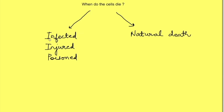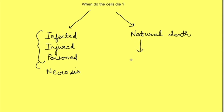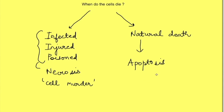The death that occurs when cells are infected, injured, or poisoned is known as necrosis. While the natural death that occurs due to signals from within the cell or from outside — but where cell death is part of the normal functioning of the body — is known as apoptosis. In layman's terms, necrosis is like a cell murder which the body does not want, while apoptosis is cell suicide where the signal comes from within the cell or from outside as part of the body's plan — a programmed decision.